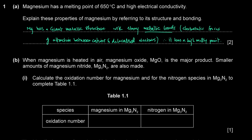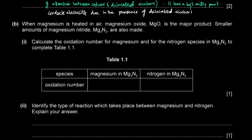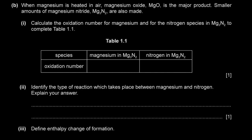Magnesium conducts electricity due to the presence of delocalized electrons in the giant metallic lattice. When magnesium is heated in air, magnesium oxide is the major product; smaller amounts of magnesium nitride are also made.